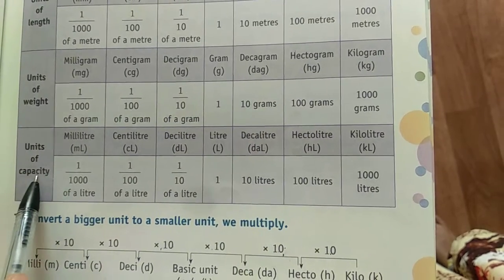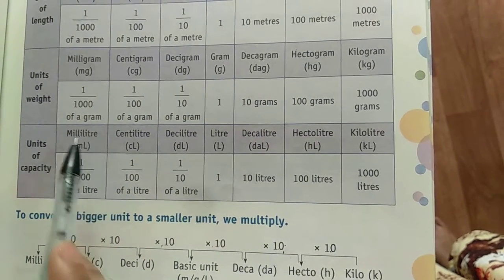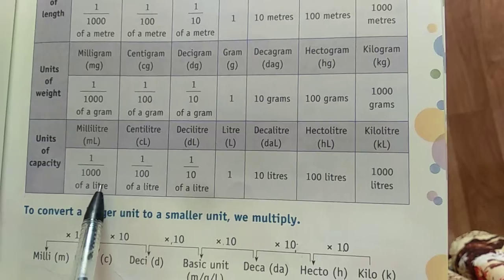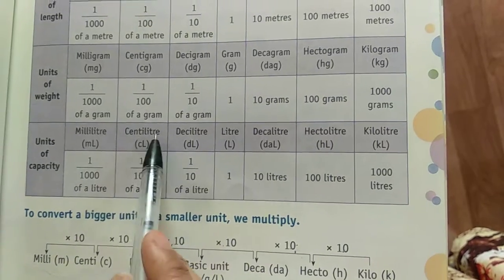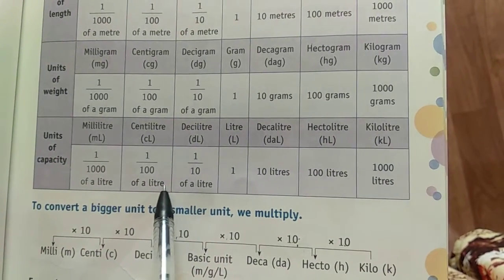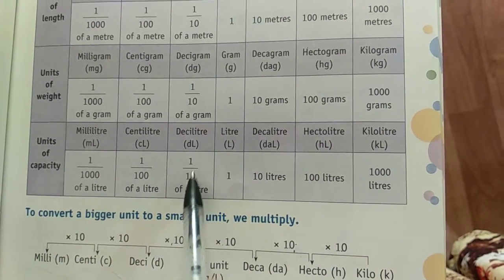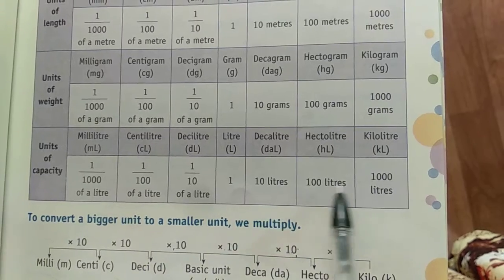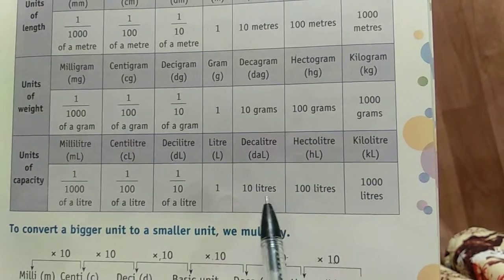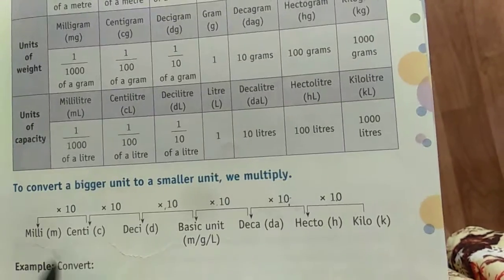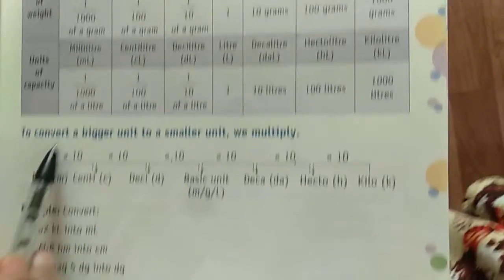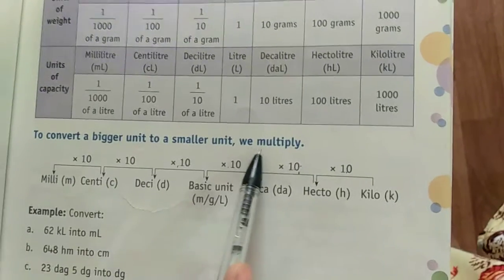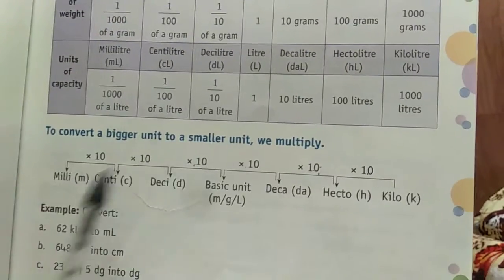Next, capacity: milliliter is 1 by 1000 of a liter, centiliter is 1 by 100 of a liter, deciliter is 1 by 10 of a liter. Moving right, multiply by 10. To convert a bigger unit to a smaller unit, we multiply.